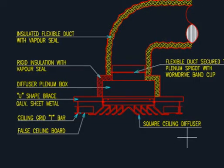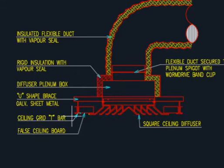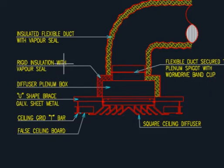So first I will start with the diffuser. This is a simple diffuser here. This is always installed horizontal, not vertical — it is installed in the ceiling. This is a flexible duct coming here from the main duct. The flexible duct comes to the plenum box, and this is the diffuser — air will be thrown from here. This flexible duct must be insulated, as somebody asked me a question before. This is an insulated flexible duct. This is a rigid insulation with vapor seals, and this is the diffuser plenum box.